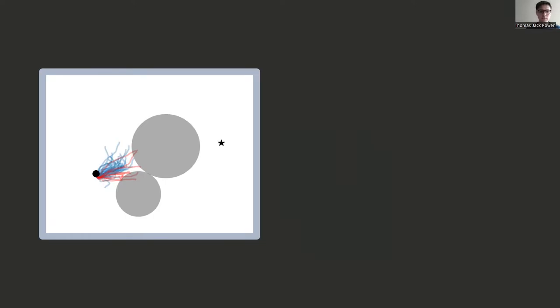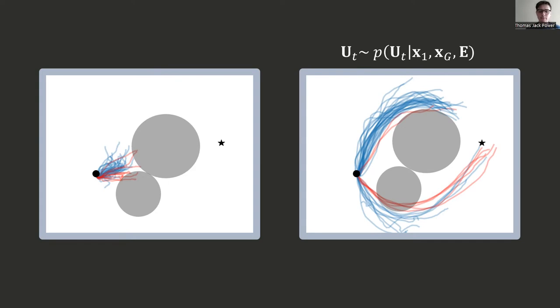In contrast, samples from our proposed learned sampling distribution are shown on the right, showing quantitatively different trajectories towards the goal while avoiding obstacles.